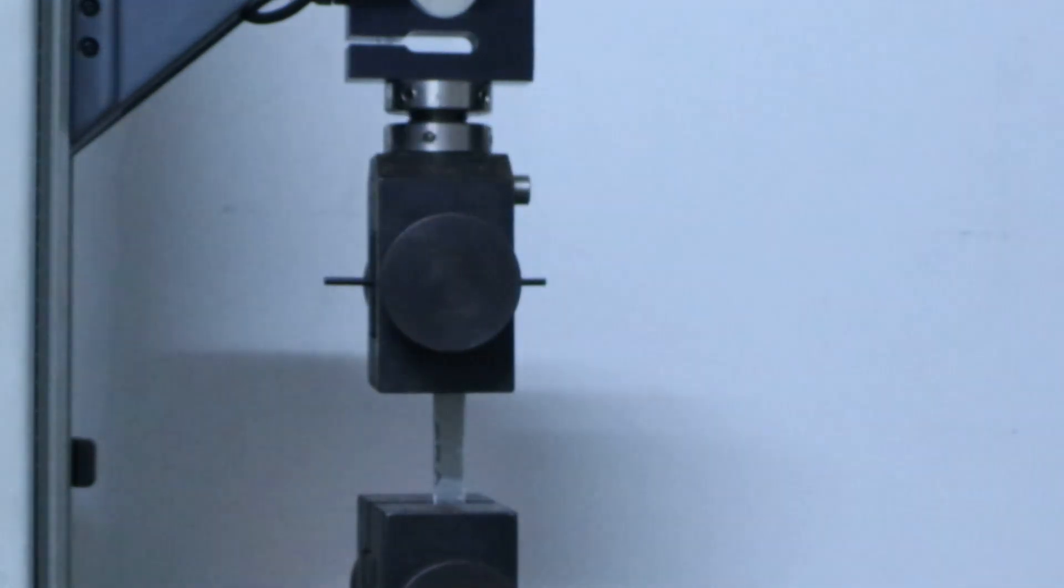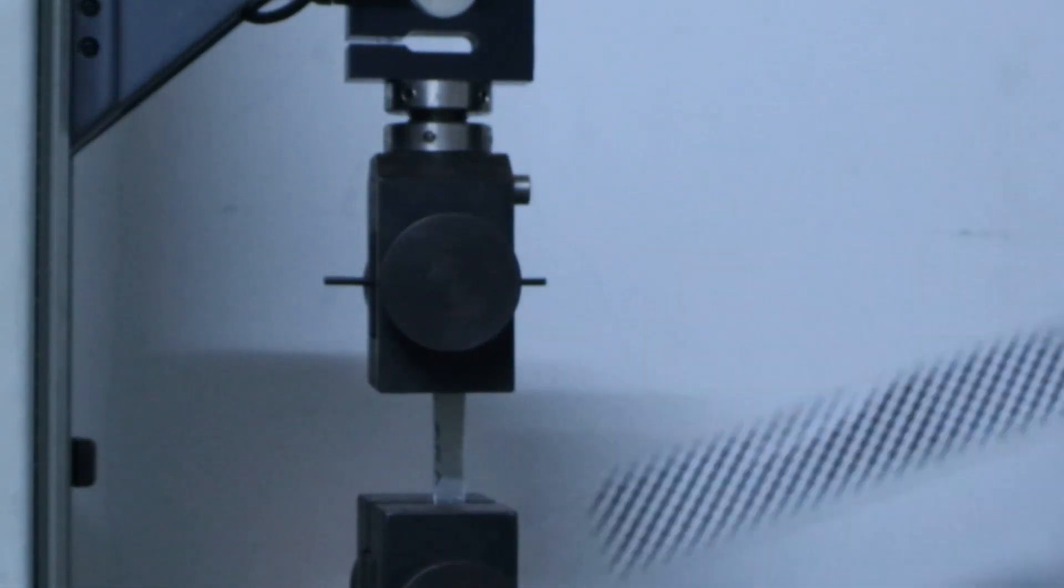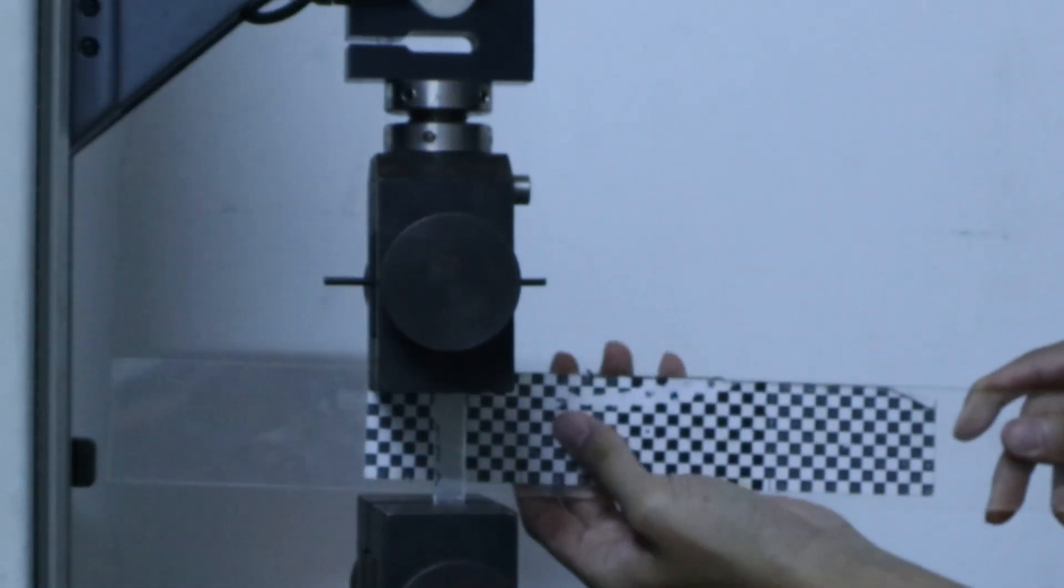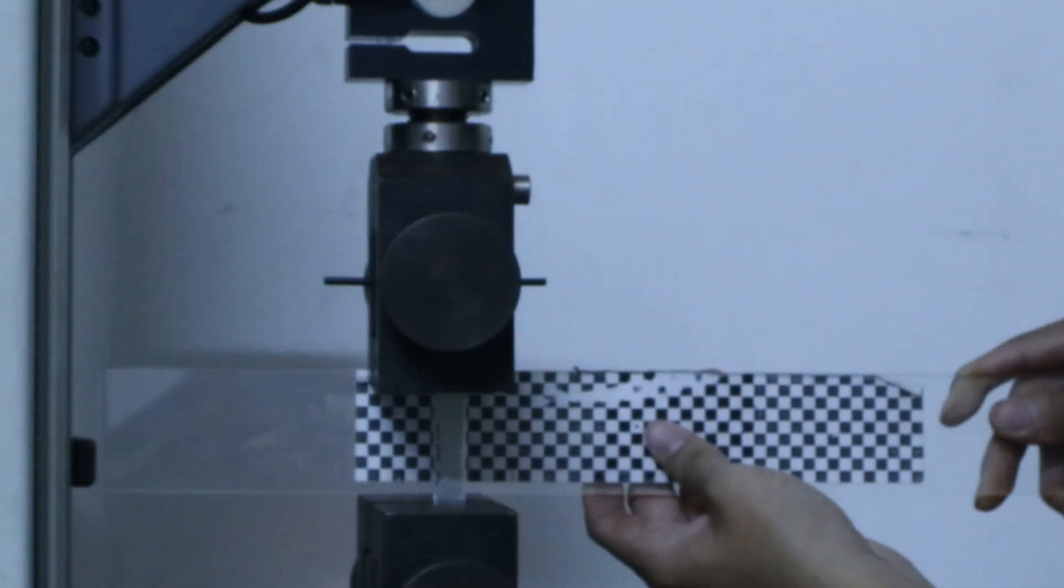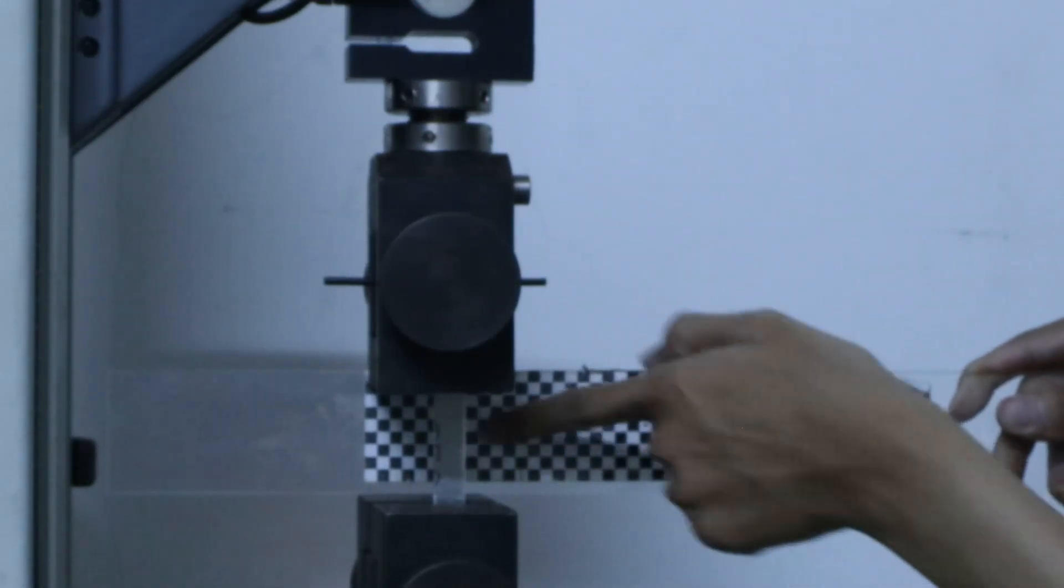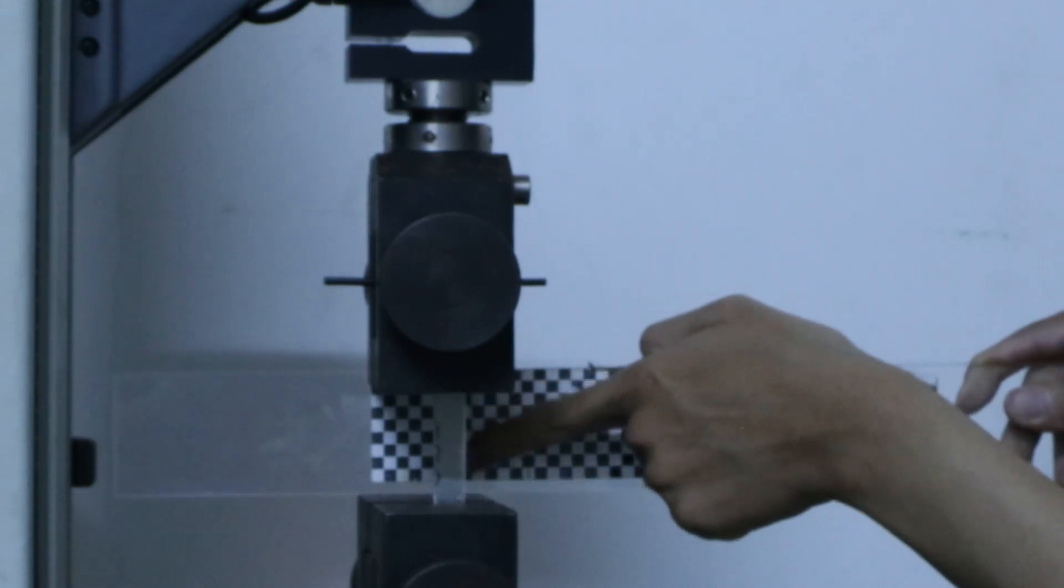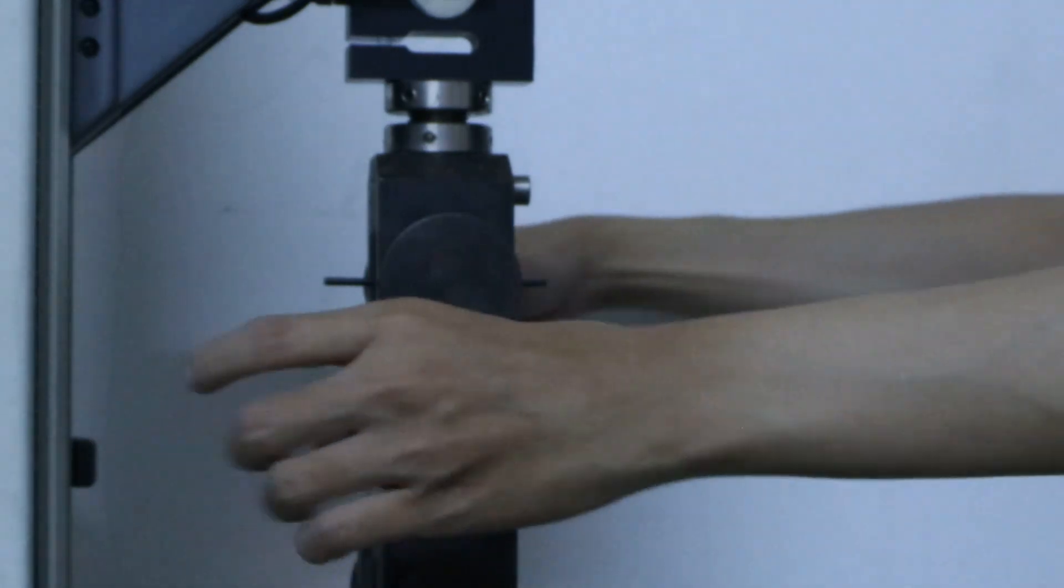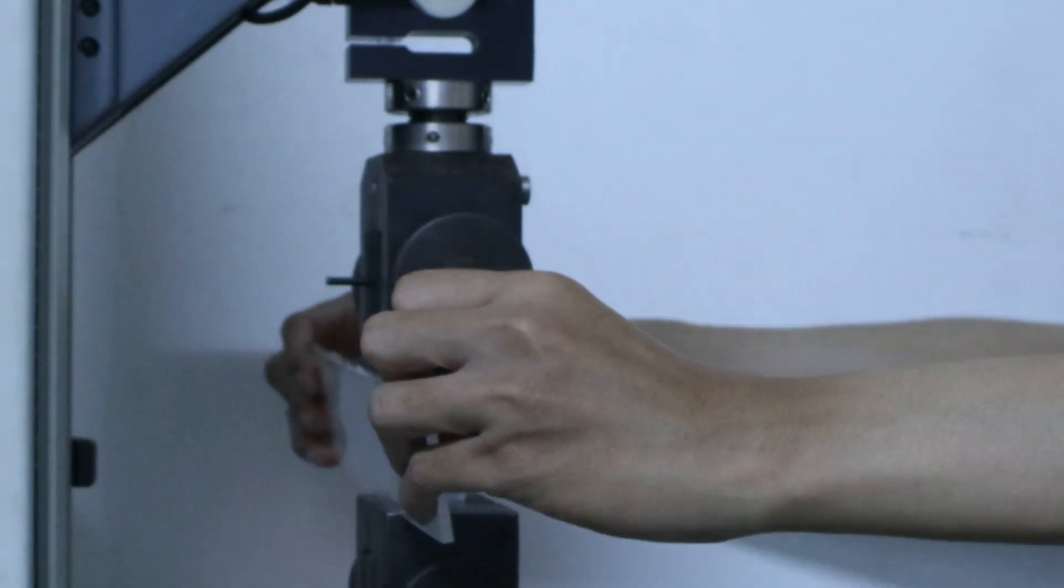And to check whether it is straight or not, you can use this calibration board or checker board to see whether it is straight. Just try to align it on the corner of the black side and see if it is straight. Try to check on the other side too to see if it is straight.